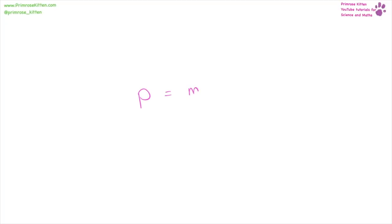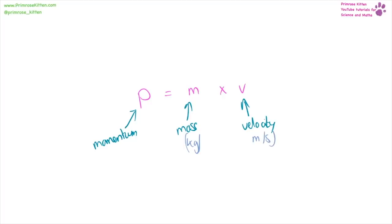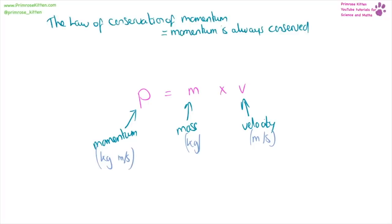Momentum equals mass times velocity. Mass is measured in kilograms, velocity in metres per second, and momentum is measured in kilogram metres per second — with a space, not a division line. The law of conservation of momentum says that momentum is always conserved, which means momentum before equals momentum afterwards. So if two objects collide, the total momentum before is equal to the momentum of the combined object afterwards.